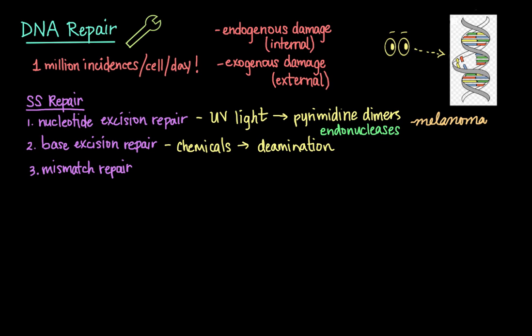When this occurs, base excision repair uses specific glycosylases to recognize and remove the damaged base. An endonuclease then cuts the phosphodiester backbone that is left behind at the damaged site, and then the gap is filled by DNA polymerase and resealed by ligase.